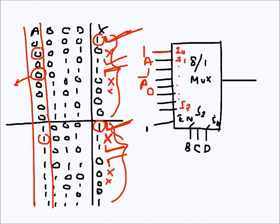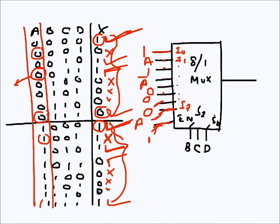For I5, the output is again zero for both rows, so I apply zero. For I6, similarly the output is zero for both cases, so I apply zero. For I7, the last one: when A is zero the output is zero, and when A is one the output is one, so I apply A to I7. And this was my enable pin as I mentioned.